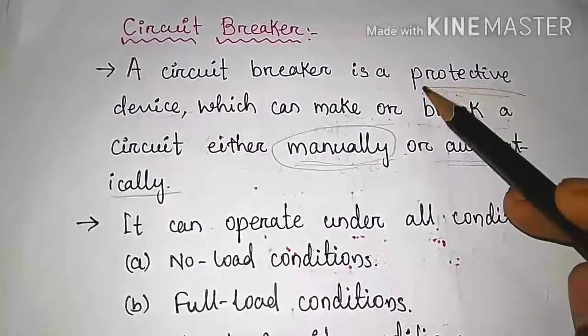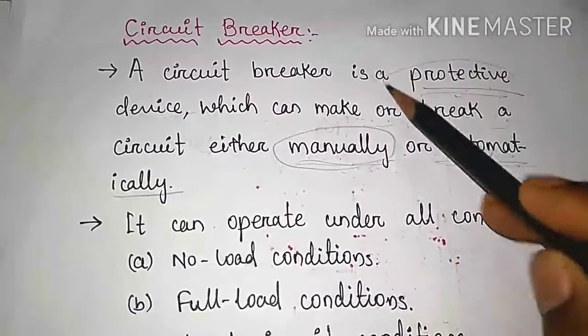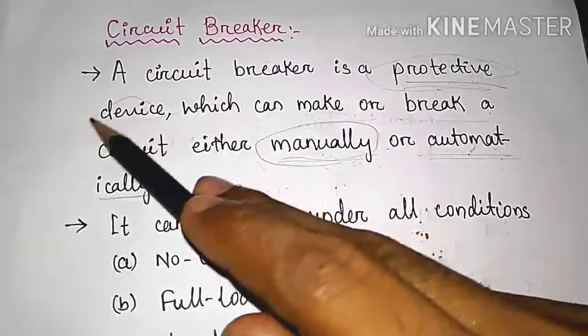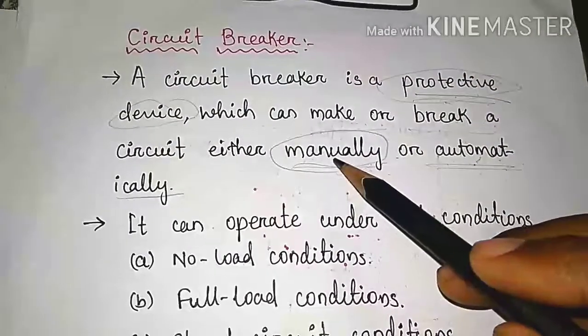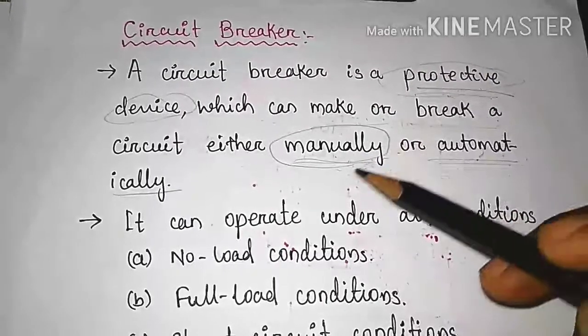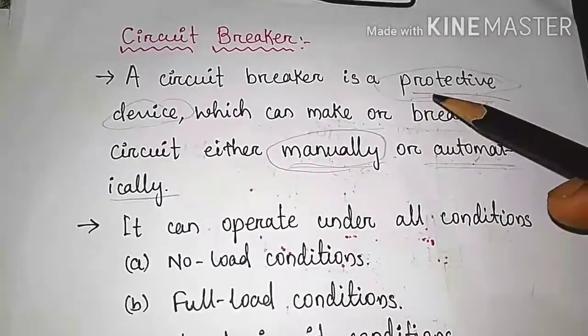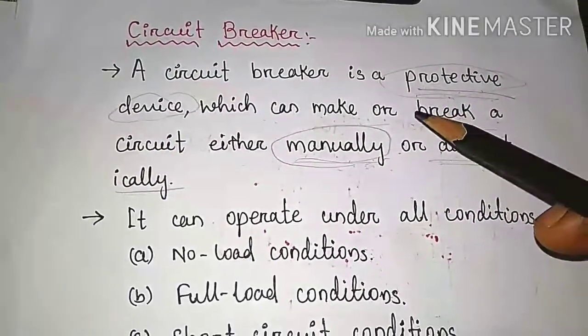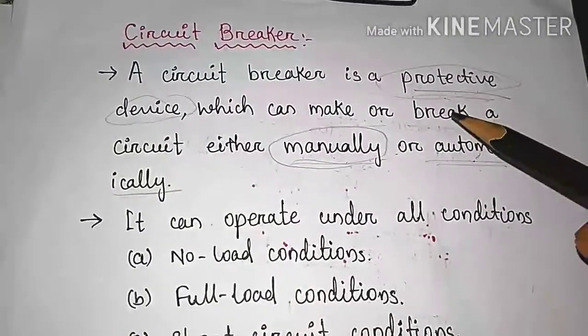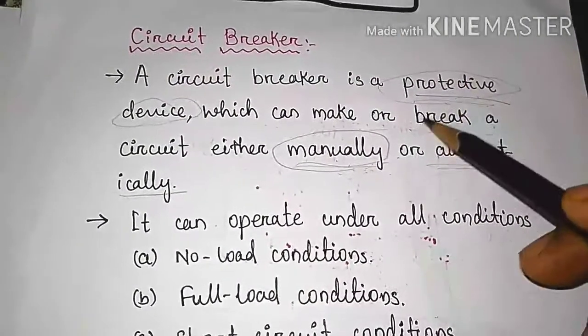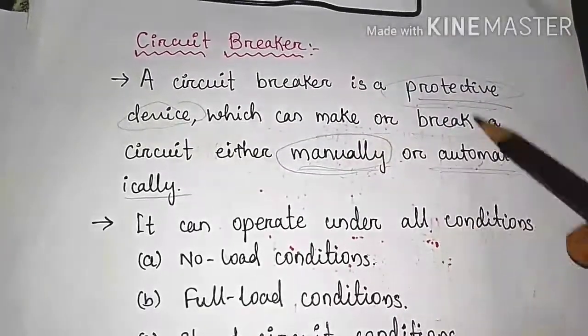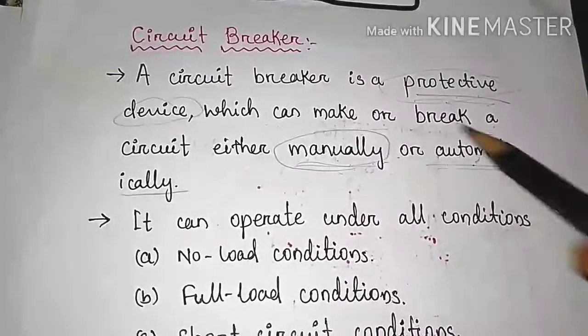First of all, the circuit breaker is a protective device because it can protect the circuit when fault occur or abnormal condition occur. When abnormal situation occur in the power system or electrical circuit, then the circuit breaker will protect the circuit.